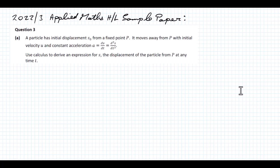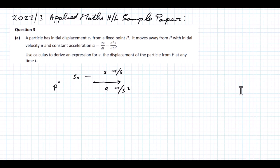I'll just draw a quick diagram of what's happening here. We have the point P, and we have the particle moving away from P at a rate of U meters per second and acceleration A meters per second squared. The distance between the particle and P is S₀. We know that A is equal to dV/dt.